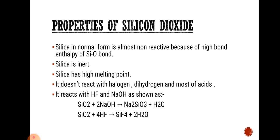Properties of silicon dioxide: silica in normal form is almost non-reactive because of high bond enthalpy between silicon and oxygen. Silica is inert. It has a high melting point. It doesn't react with hydrogen, halogens, and most acids. When silicon dioxide is added to sodium hydroxide, it gives sodium silicate plus water.